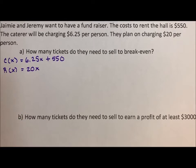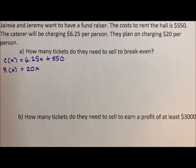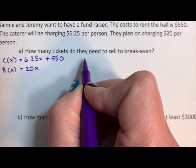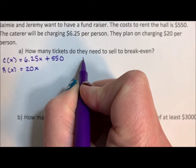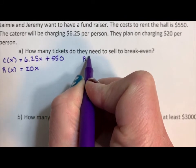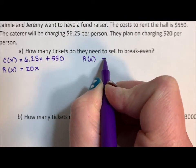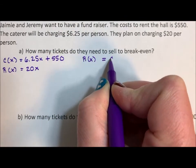So the question is, how many tickets do they need to sell to cover all their costs? And then after that, if they sell more tickets than that, then the money will go towards their fundraiser. So breaking even is when the money in is equal to the money out.